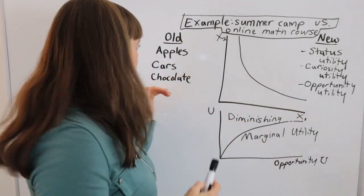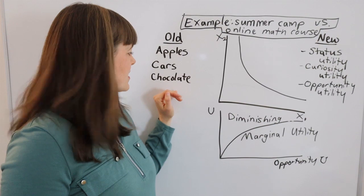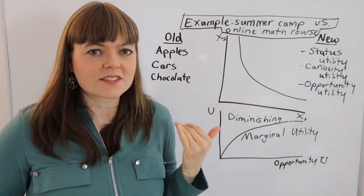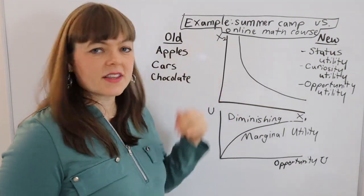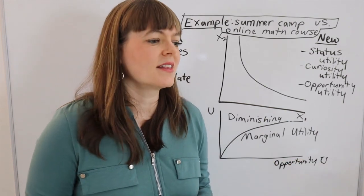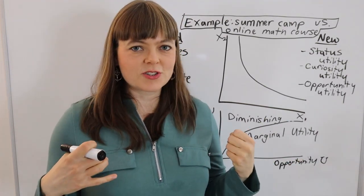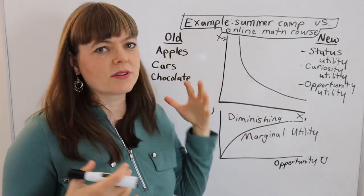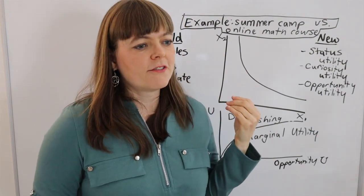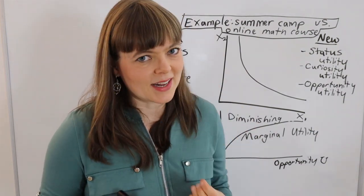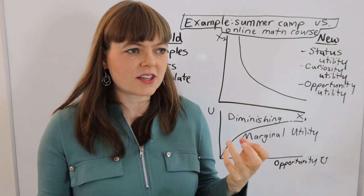And we could go back to our old types of goods like apples and chocolate and cars. And we could separate each of these into different types of utility, like satiation utility. How much does the apple satisfy your hunger versus like the experience of eating the apple versus the experience of eating the chocolate.